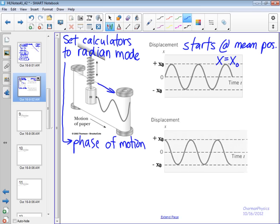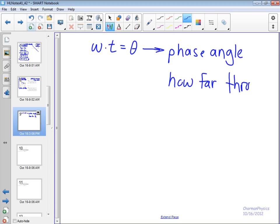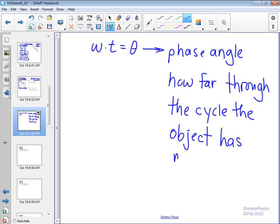X equals X naught, which is the amplitude, times the sine of omega t. Now, the reason that we're using omega t here, what that ends up giving us, omega times t is going to be equal to theta. And theta is just the phase angle. This is how far through the cycle the object has moved. And we're going to give that the unit, it's going to be in radians.